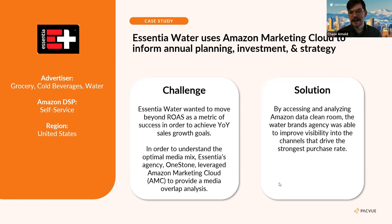Let's quickly define what AMC is. AMC is the Amazon Marketing Cloud — it's Amazon's data clean room that allows brands to understand a deeper impact of how their ads are working. AMC is an aggregator of all ad interactions when typically ads would sit in individual silos. The tool pulls in data across sponsored product ads, sponsored display ads, and DSP orders, and then shows the overlap of all of these ad units together.